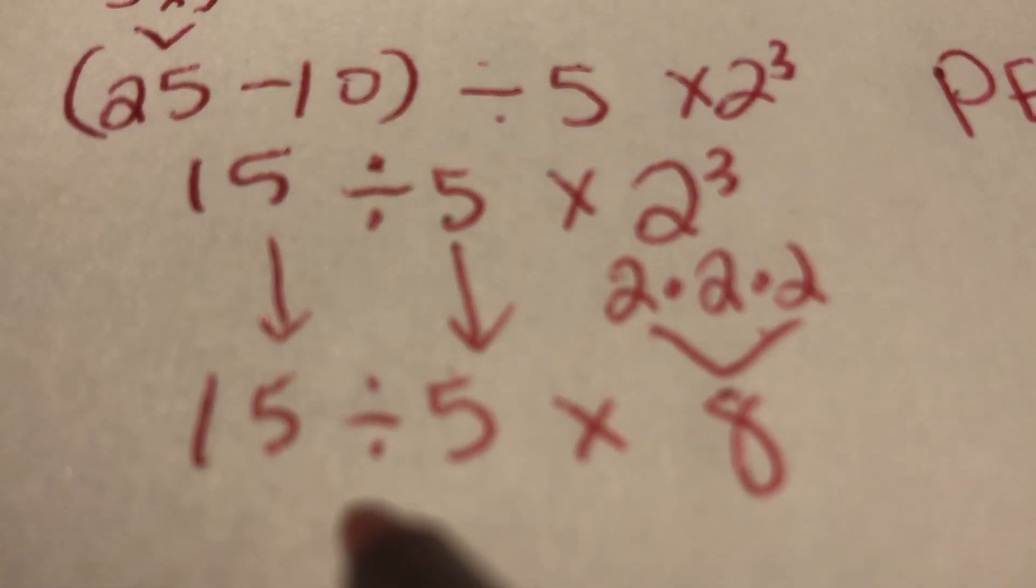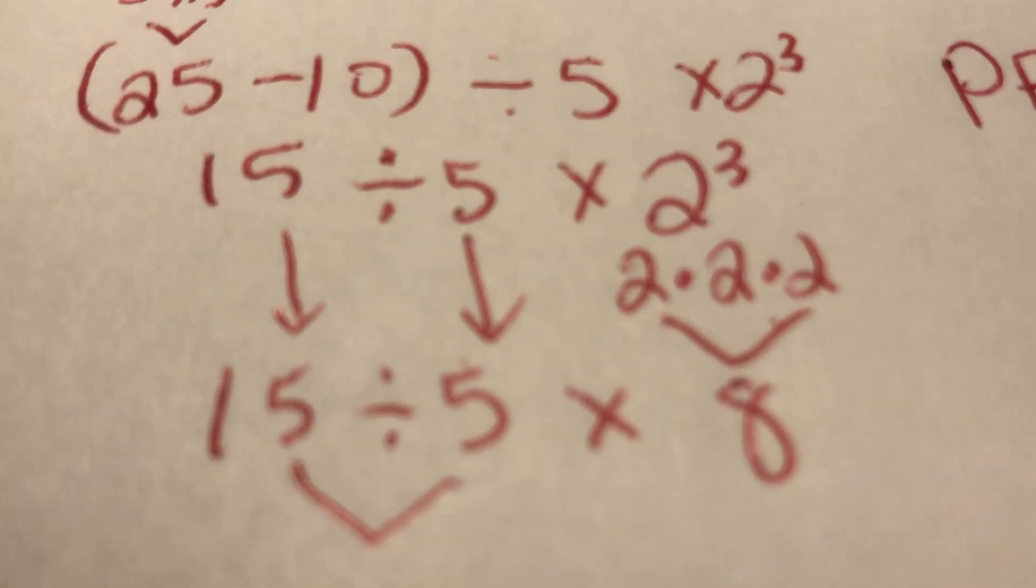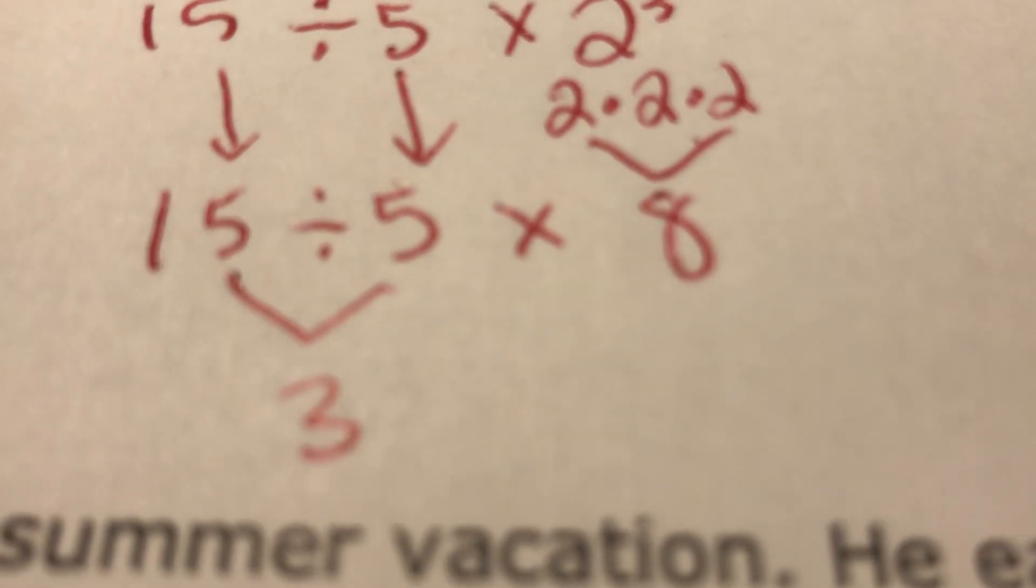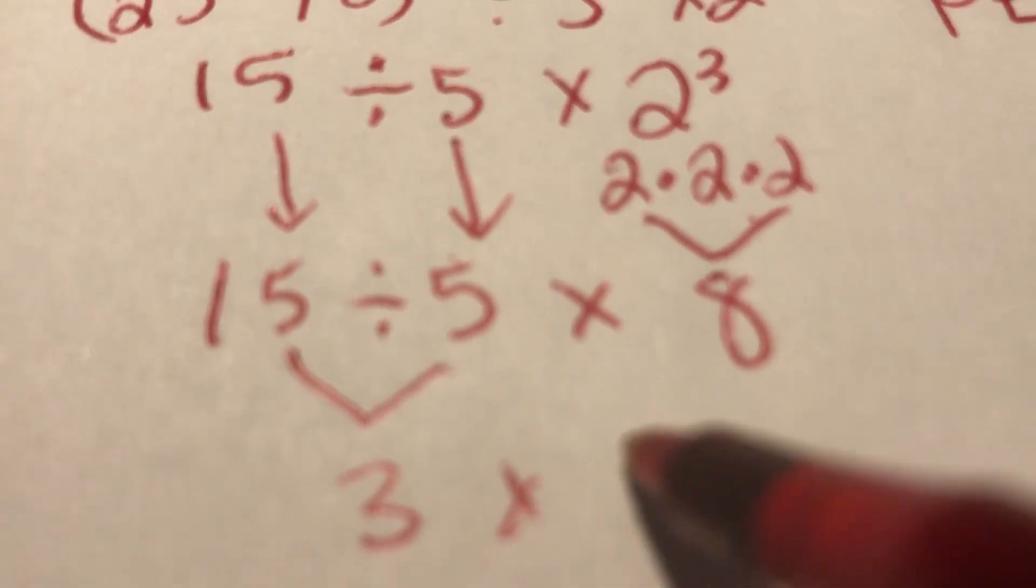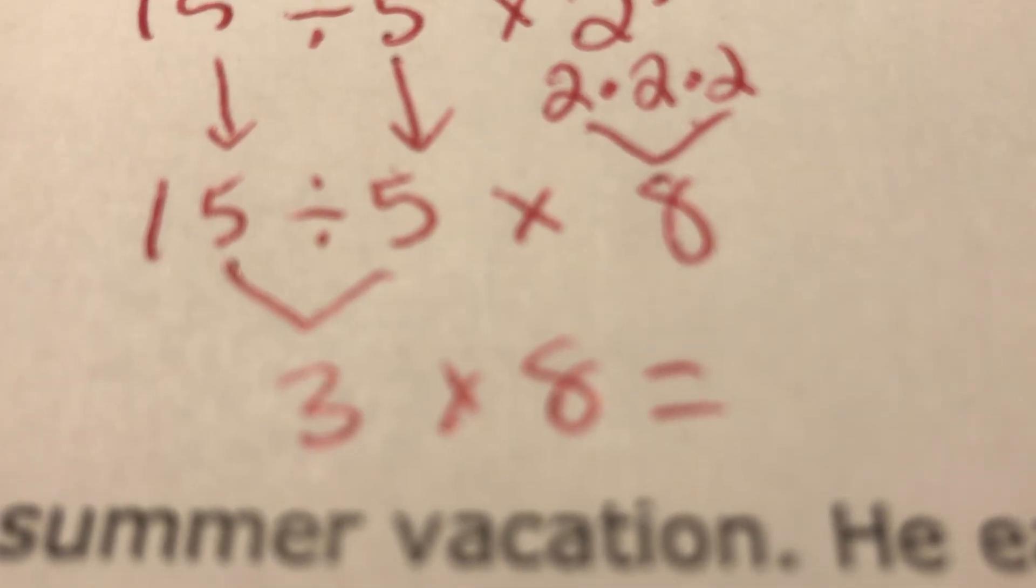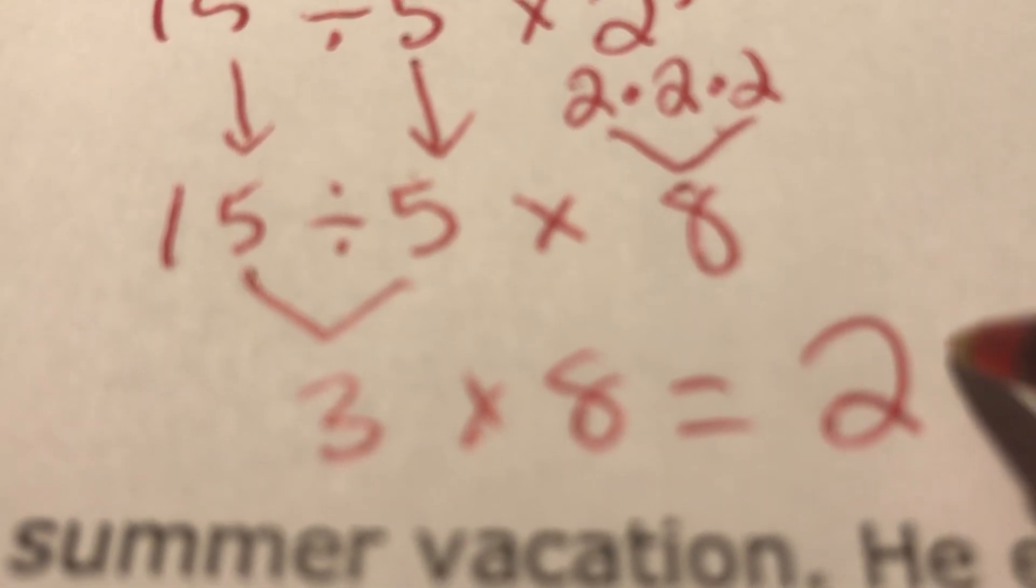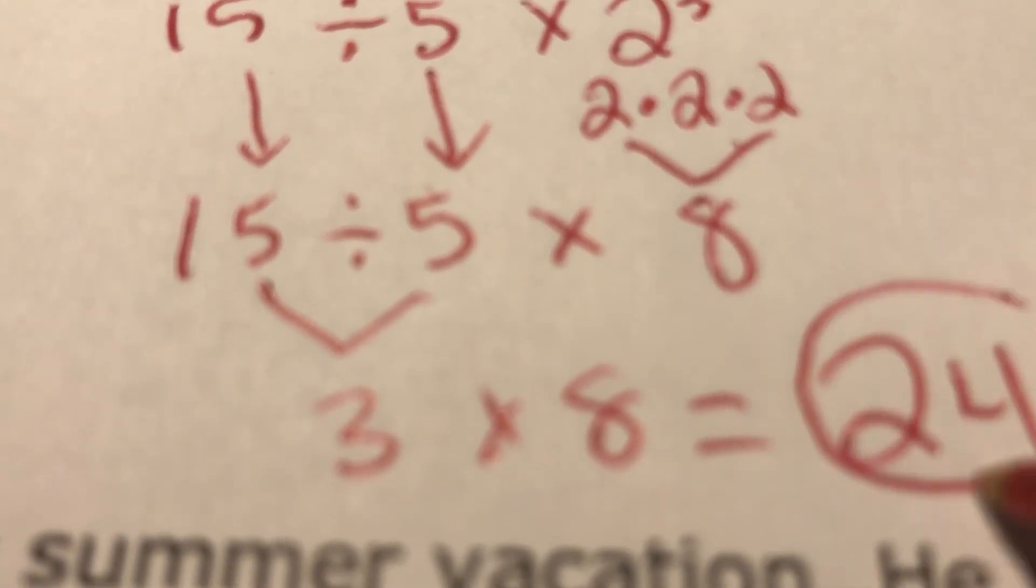So the division first is going to be 15 divided by 5, and that is 3. 3 times 8, and we're finally going to be done. And that will be 24. 24 is our answer.